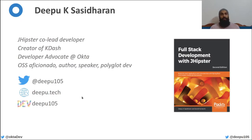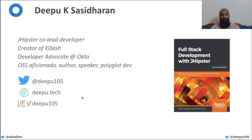My name is Deepu K. Shashidharan. I'm the co-lead of JHipster. I also created a nifty dashboard called K-dash for Kubernetes. I'm an open source aficionado and a polyglot developer. I work as a developer advocate at Okta with a focus on DevOps. I also publish frequently about languages and tech on my blog — you can find it on deepu.tech.